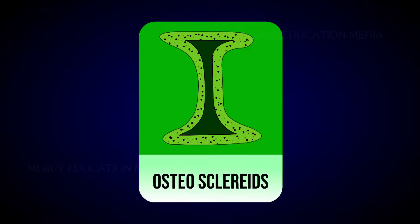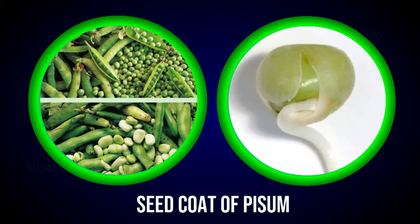The rod-shaped scleroids with dilated ends are called osteoscleroids, that is, bone cells. Example: seed coat of Pisum. What are fibers?